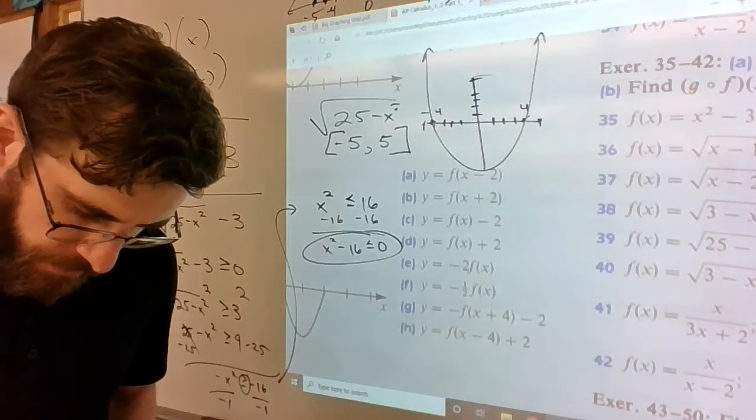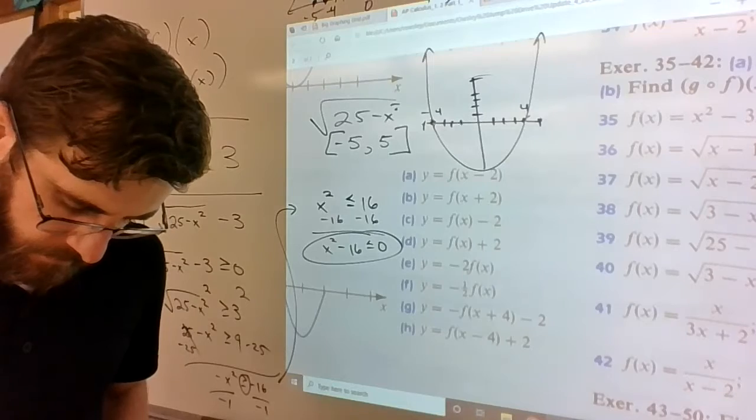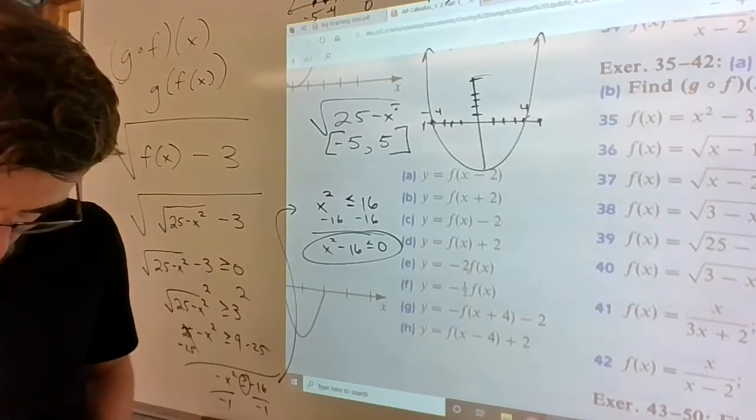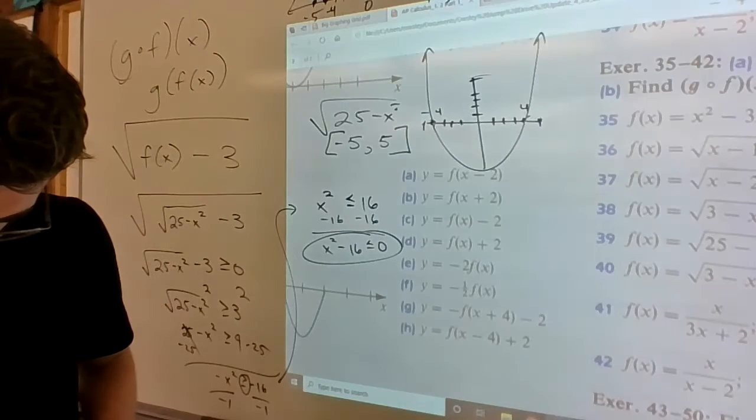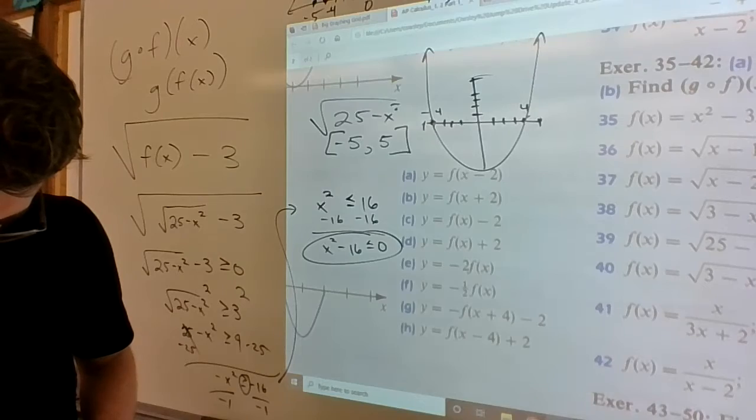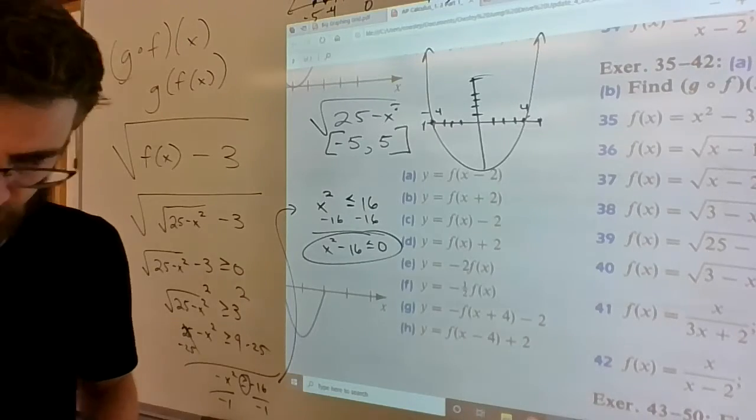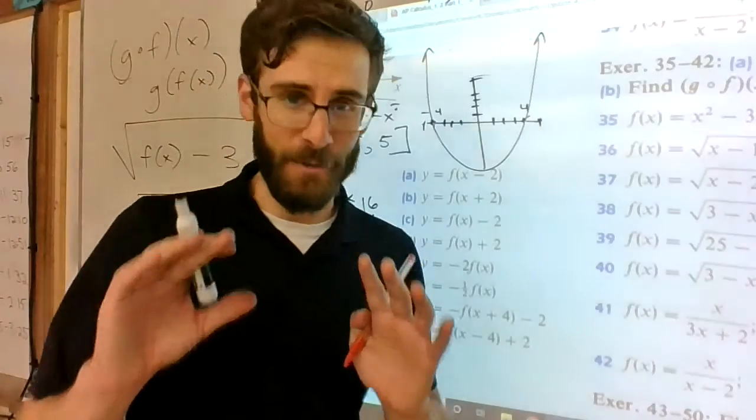That ends up being the final answer. So from -4 to 4, that's going to be part b's domain on number 39.